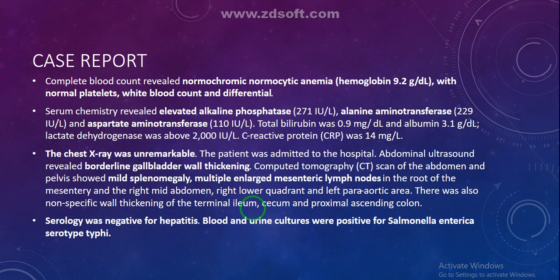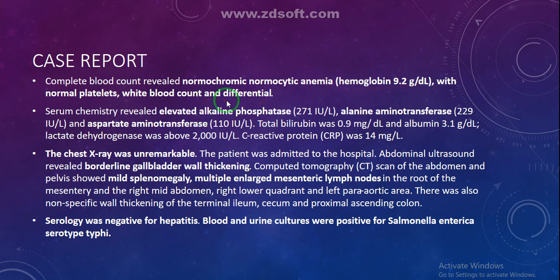The CBC or complete blood count revealed normochromic normocytic anemia — a type of anemia in which the average size of the red blood cell and the hemoglobin content are within normal limits. The hemoglobin was 9.2 grams per deciliter, with normal platelets, white blood cell count, and differential.